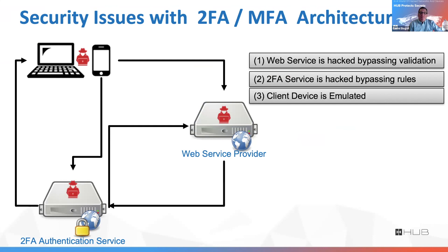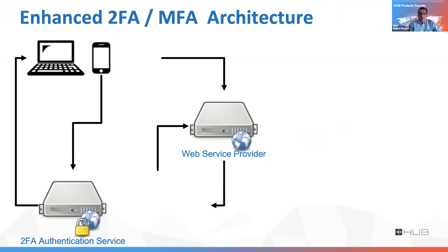How does the system know that my phone is me because it sent me a text? But if somebody can emulate my phone, then the hacker can receive the text and log into the system. So while these systems are enough to protect Gmail, they actually have a lot of places to be hacked.